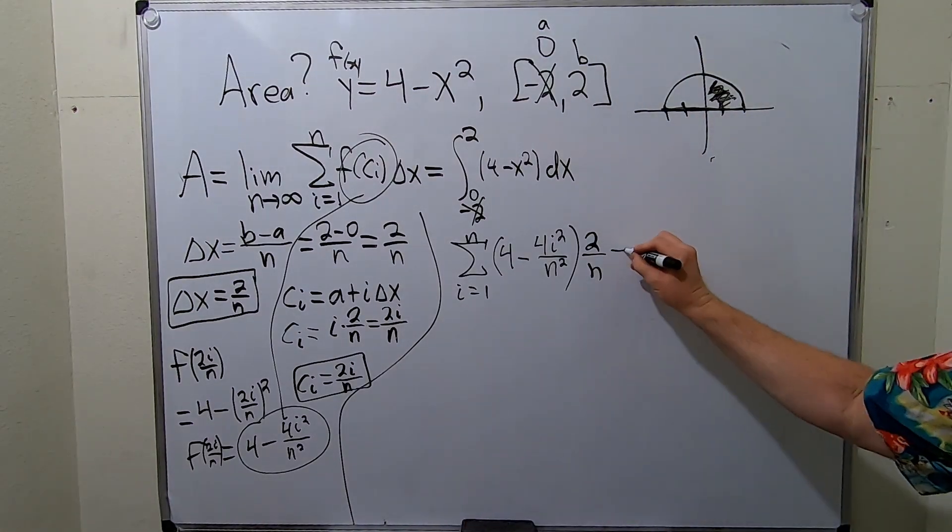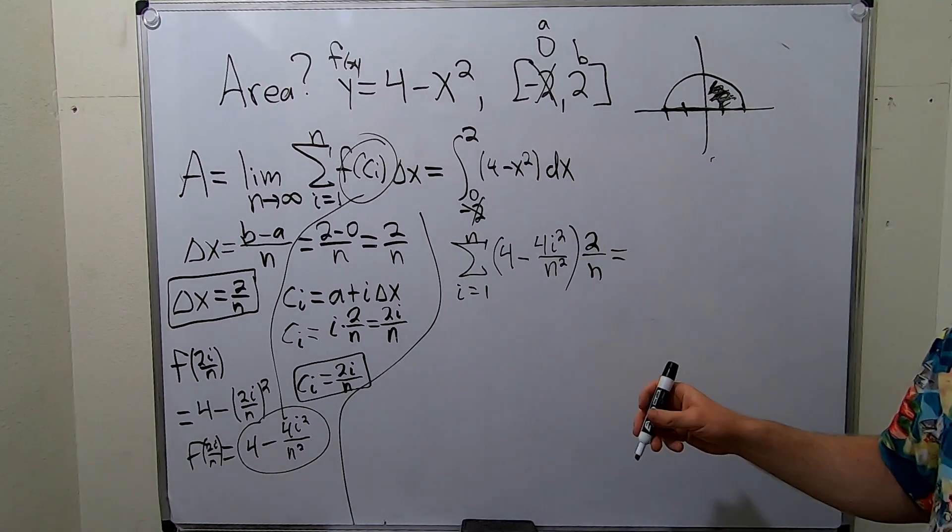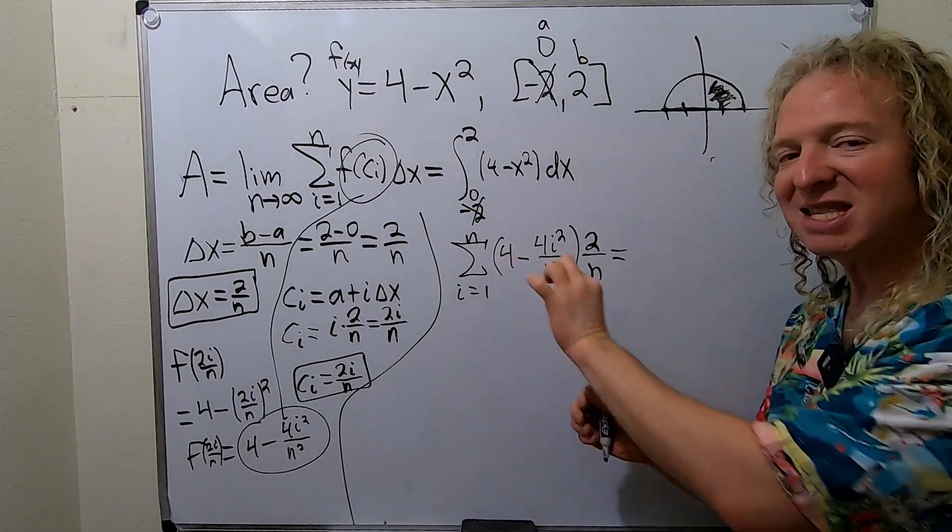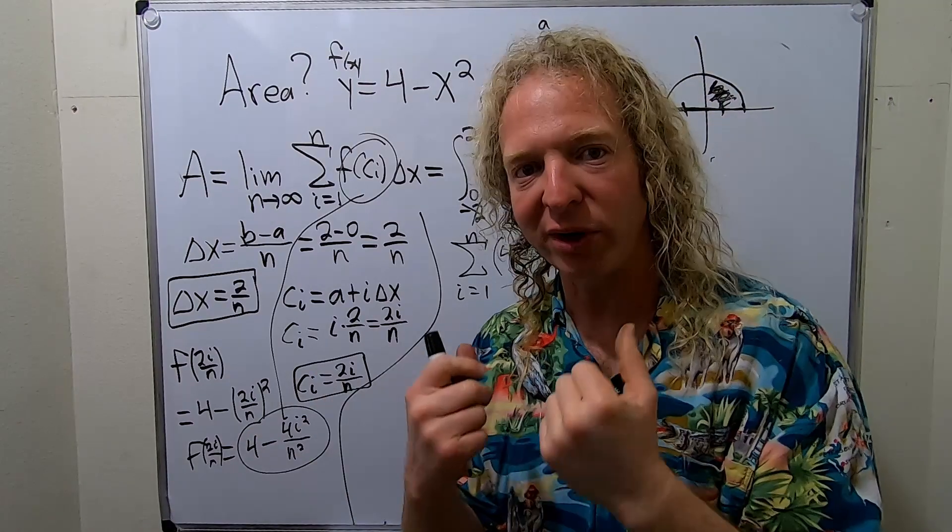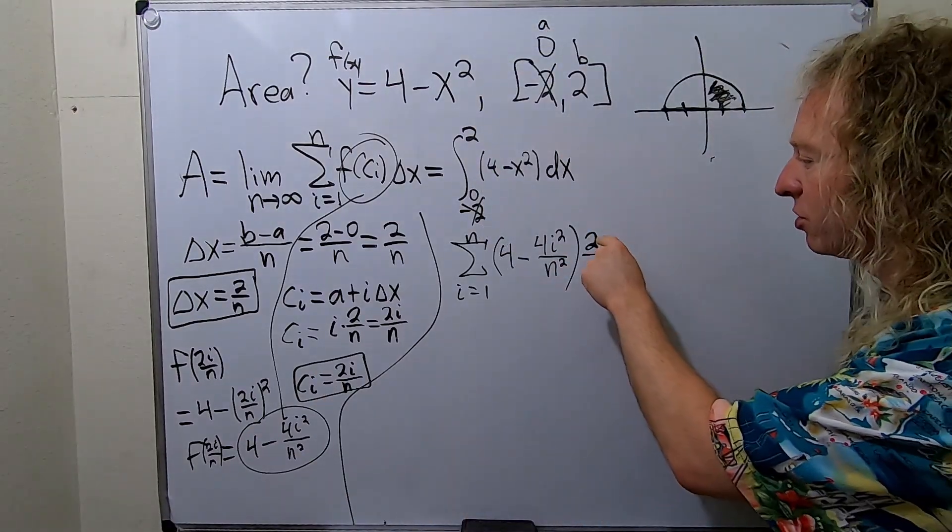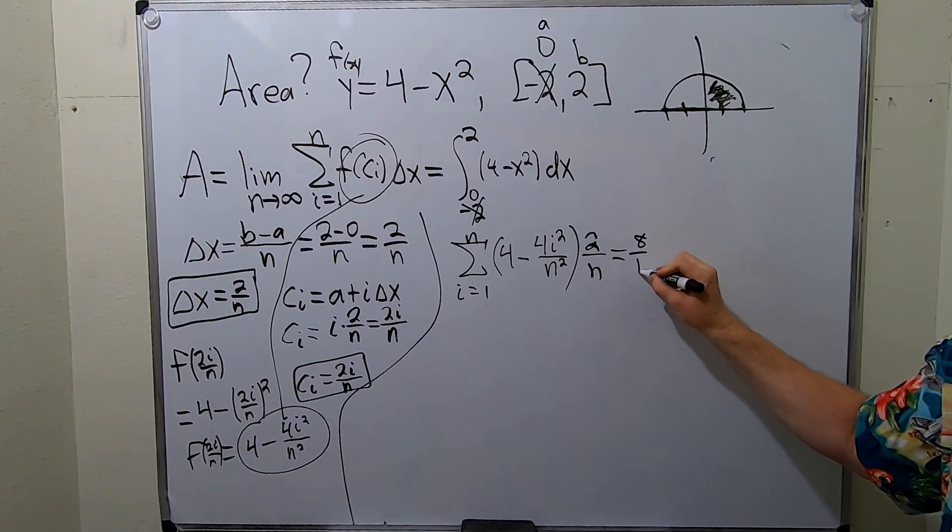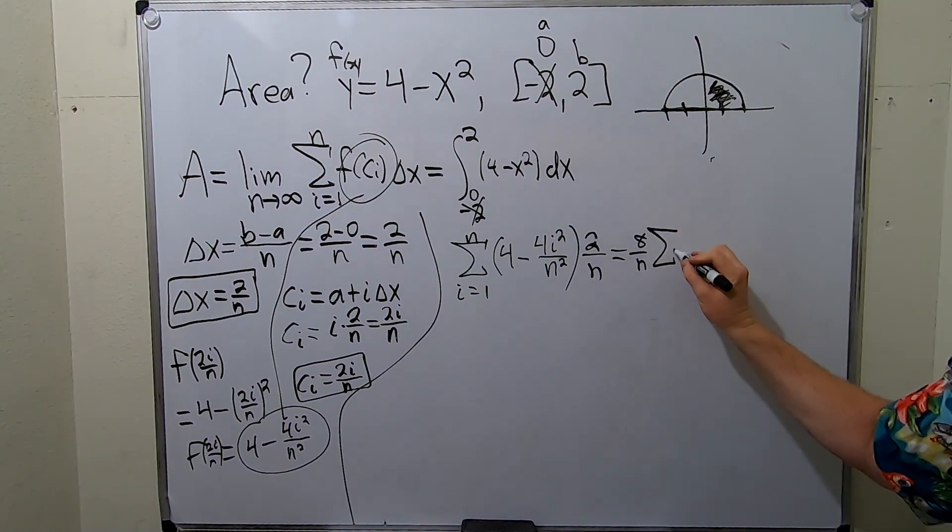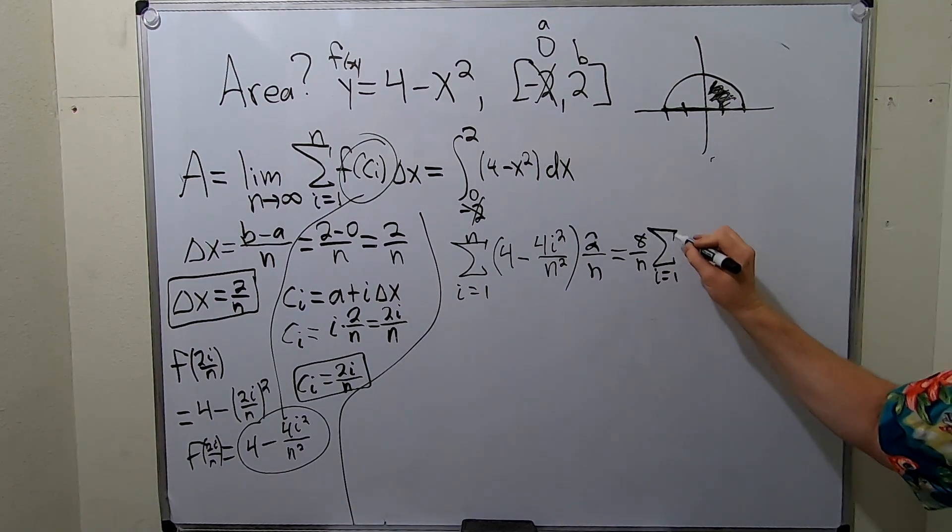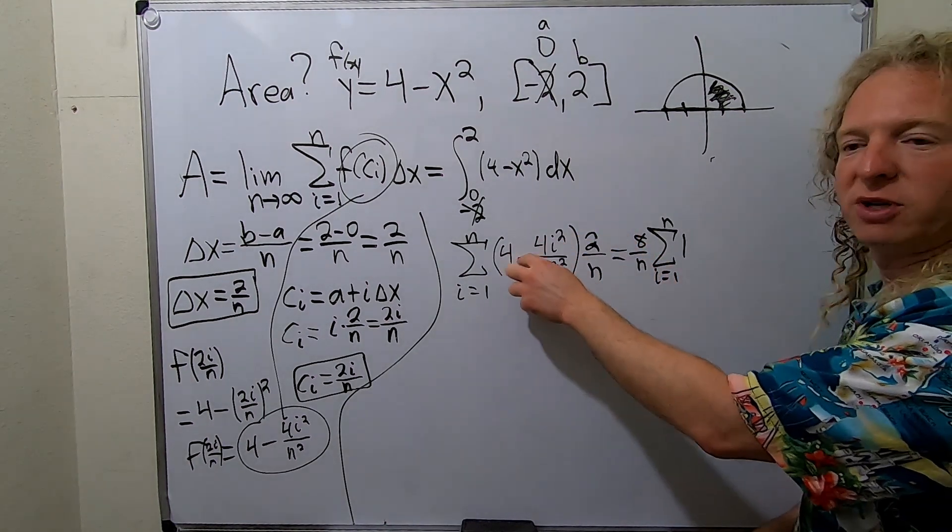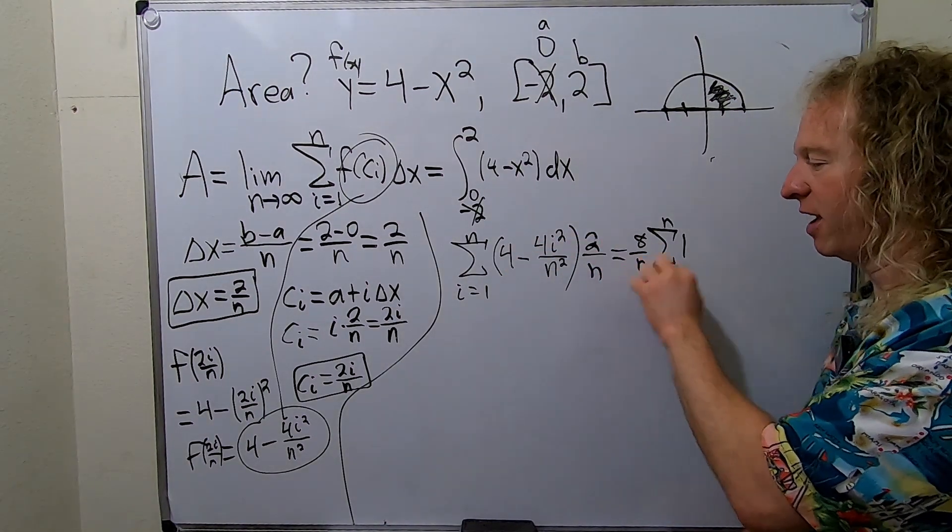Next step. So basically now we're going to multiply this times this. And anything that doesn't have an i, you can pull it out. So watch. So 2 over n times 4. So 2 times 4 is 8. So it's 8 over n. And we can pull it all out. So we have i equals 1 to n. And then we have a 1 here. 2 times 4 is 8. And then you have the n.